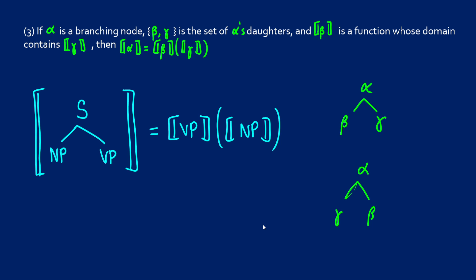So what we can say in this case is that the verb phrase is a function acting on the noun phrase. So alpha is the function beta applied to gamma. So if we want to know what the meaning of the sentence is in this case, this means one of its daughters is a function acting on the thing that's in its domain.